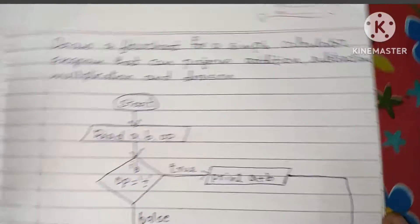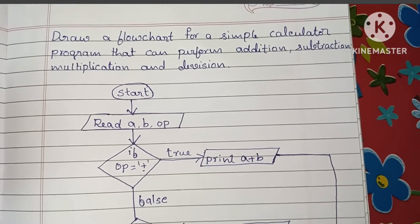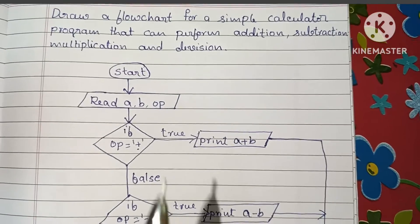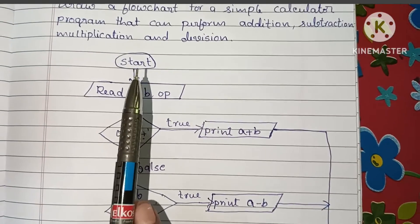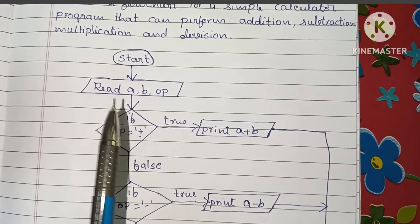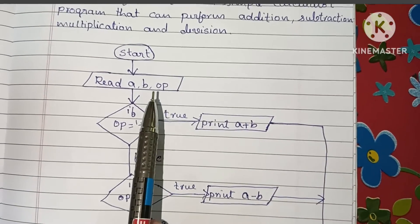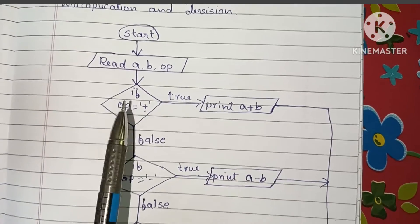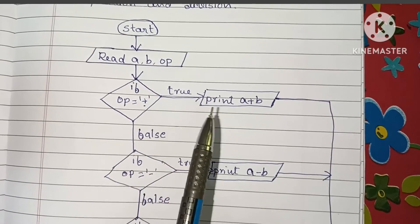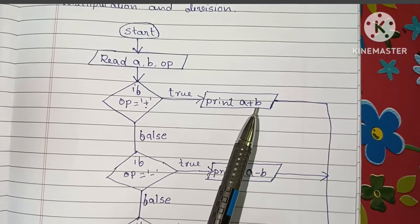To summarize: the flowchart always starts with a start statement. We read two variables a and b, then read which operation to perform. We then check if the operation is equal to plus; if so, we perform a plus b and print the result.